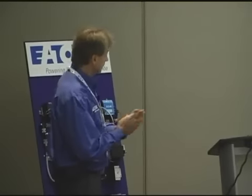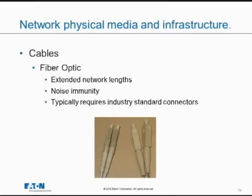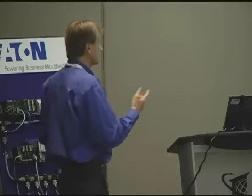Then there are fiber optic cables — still a cable, but using light instead of copper. People go to fiber optic to extend network lengths, because without resistance in the cable, light can travel much farther than a voltage signal on a resistive copper cable. The other reason is noise immunity — since we're using light, as long as external light doesn't get in, we're noise immune. Drawbacks include requiring specialized industry-standard connectors and the fact that repairing fiber optics is a specialized field. So you gain extended network length and noise immunity, but it may be harder to implement.